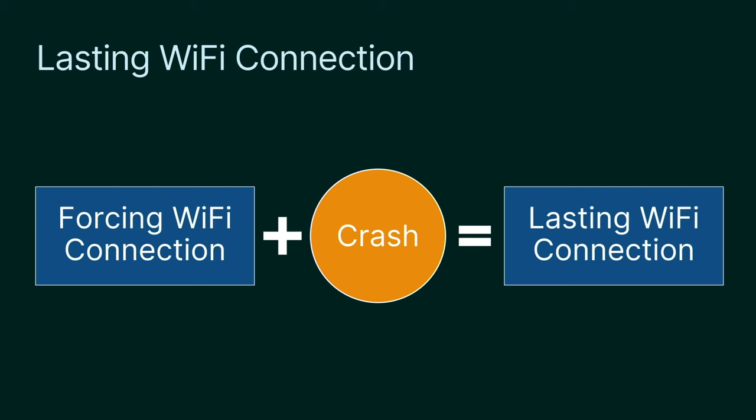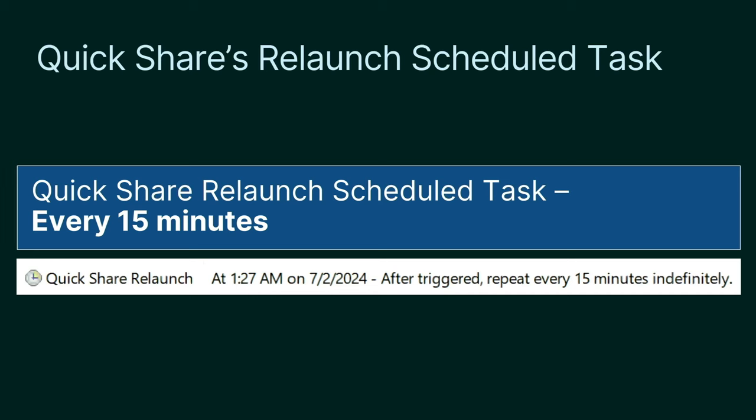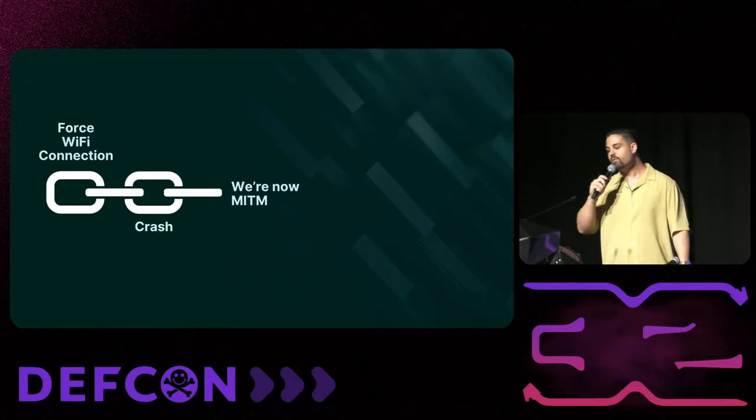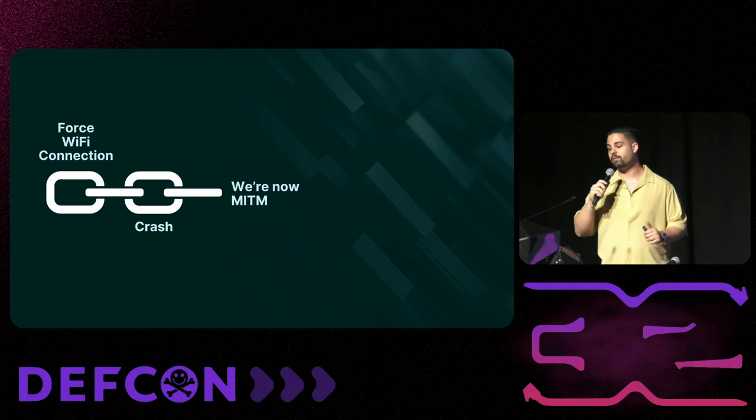If we force a Windows computer with QuickShare to connect to our malicious Wi-Fi network and then instantly crash the app with one of our denial-of-service vulnerabilities found by the fuzzer, we get a forever-lasting Wi-Fi connection to our hotspot. As for the crash, we're not worried about losing the ability to further exploit the app — because when QuickShare is installed it creates a scheduled task that runs every 15 minutes and restarts QuickShare if it's not already running. These two links are only the first part of our RCE attack chain.